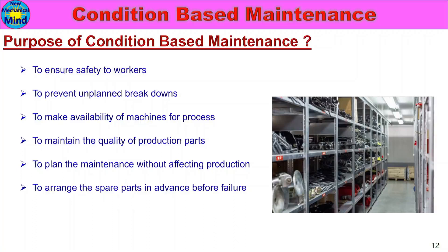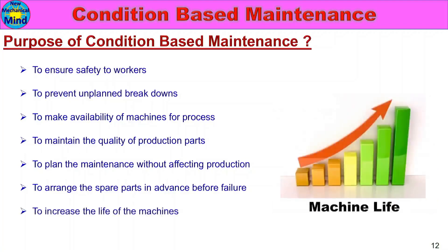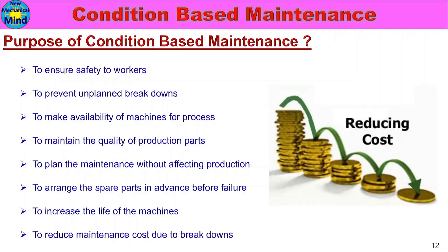Fifth, to plan maintenance without affecting production. Sixth, to arrange spare parts in advance before failure — since we know the machine condition, we can prepare spare parts in advance. Seventh, to increase the life of machines and reduce maintenance costs due to breakdowns. Unplanned or sudden machine breakdowns stop production, and critical or costly parts can be damaged.